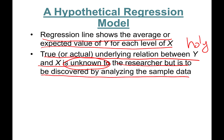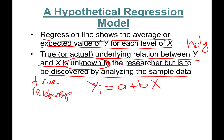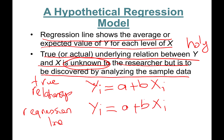This true relationship is to be discovered by analyzing the sample data. So for instance, this is a regression line — this is the true relationship between Y, the dependent variable, and X, the independent explanatory variable. We sometimes put subscript i for individual observations. For example, Y_i could be sales by individual company i, and X_i would be company i's advertising spending. We also have the regression line — the estimated relationship: Ŷ_i = a + b·X_i.